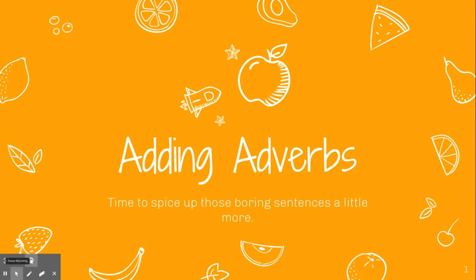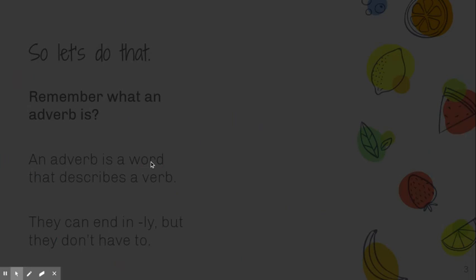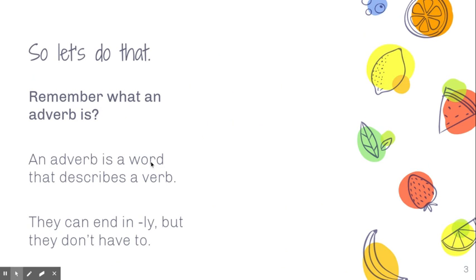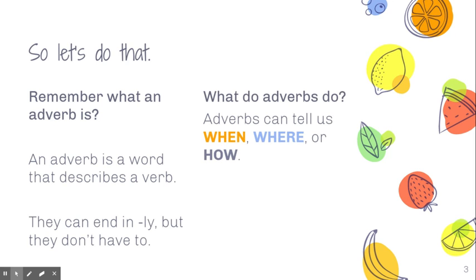So let's review real quick. An adverb is a word that describes a verb. A lot of them end in -ly, like softly, loudly, or quietly, but they don't have to. And remember, adverbs can answer three different questions: the how, the when, or the where.